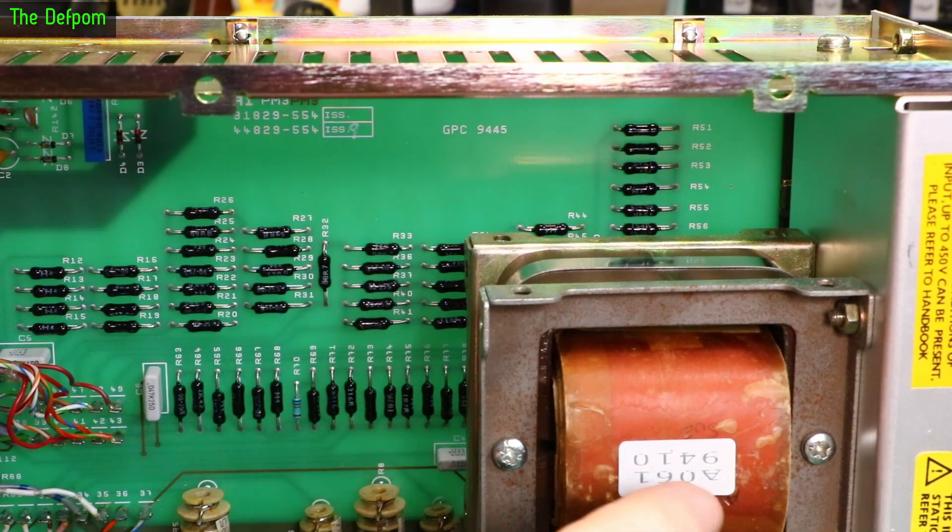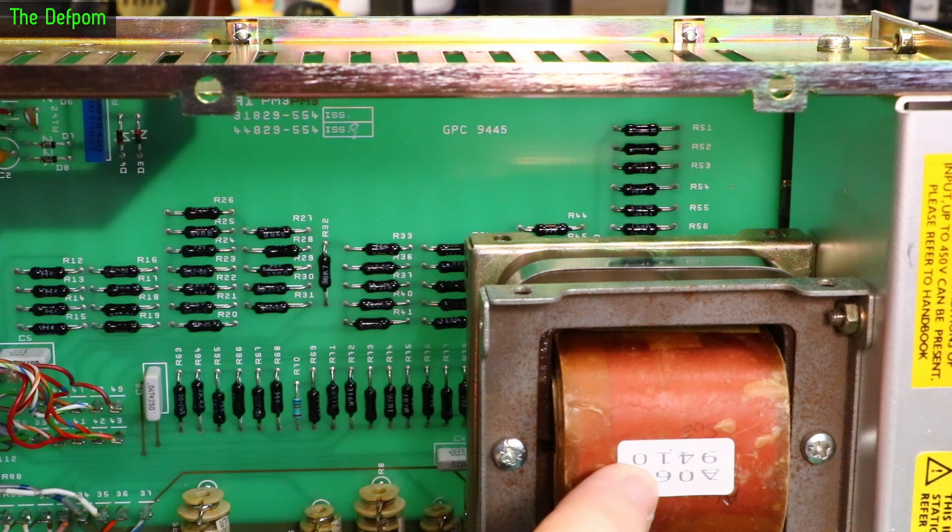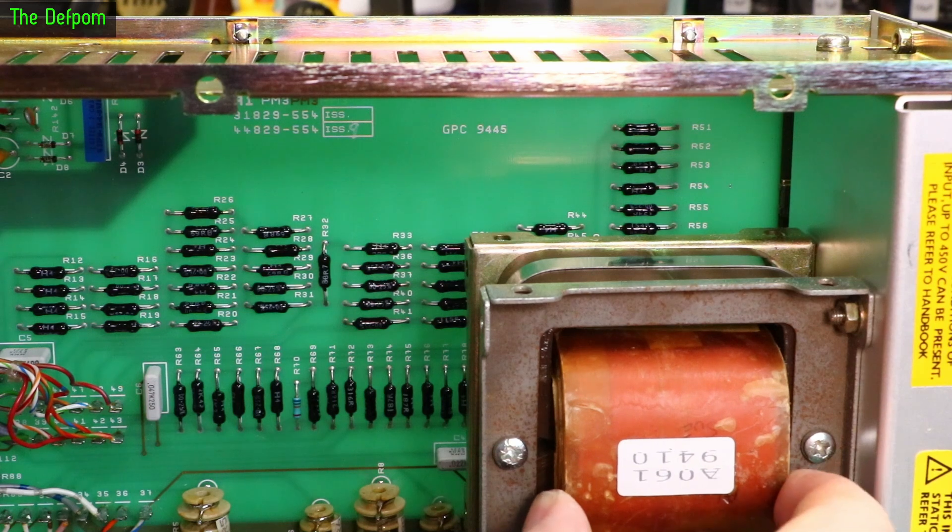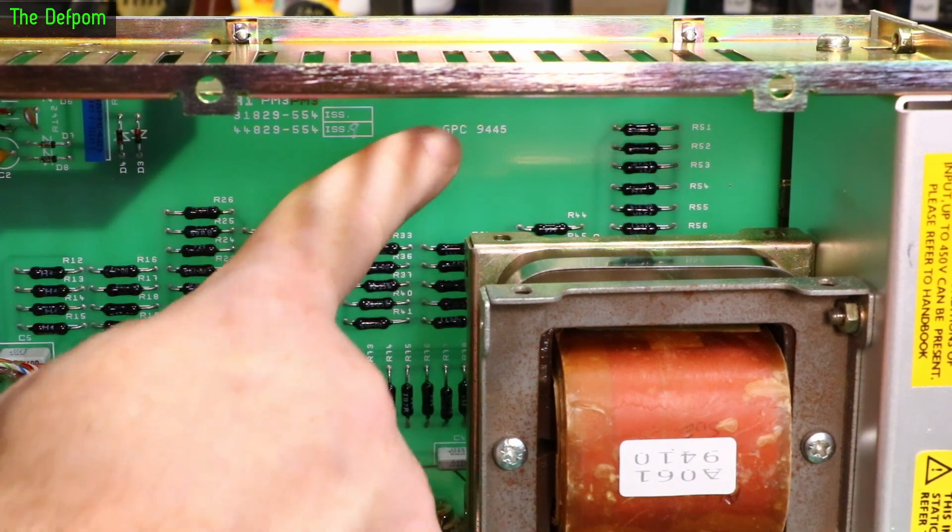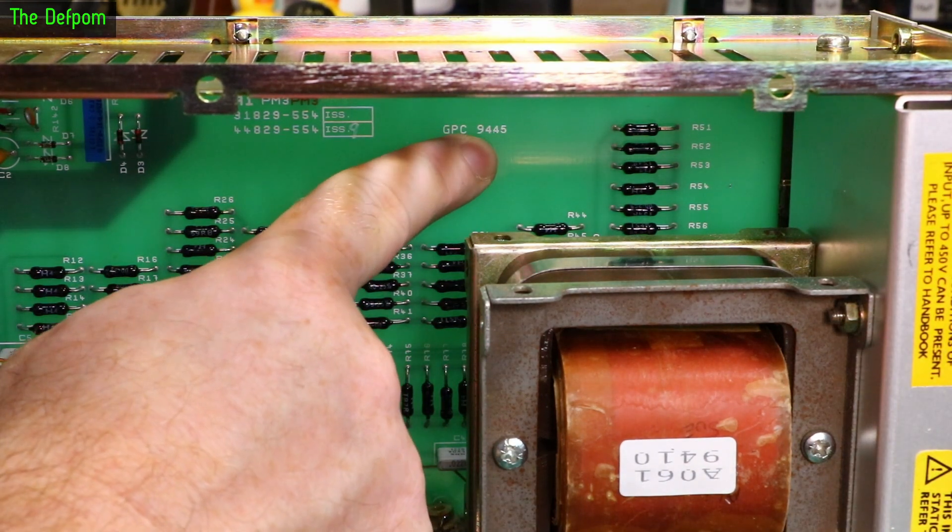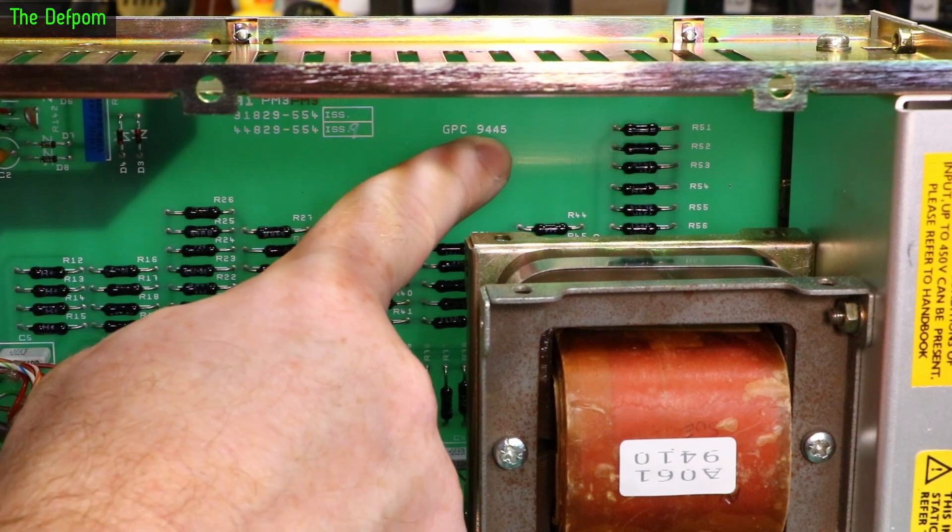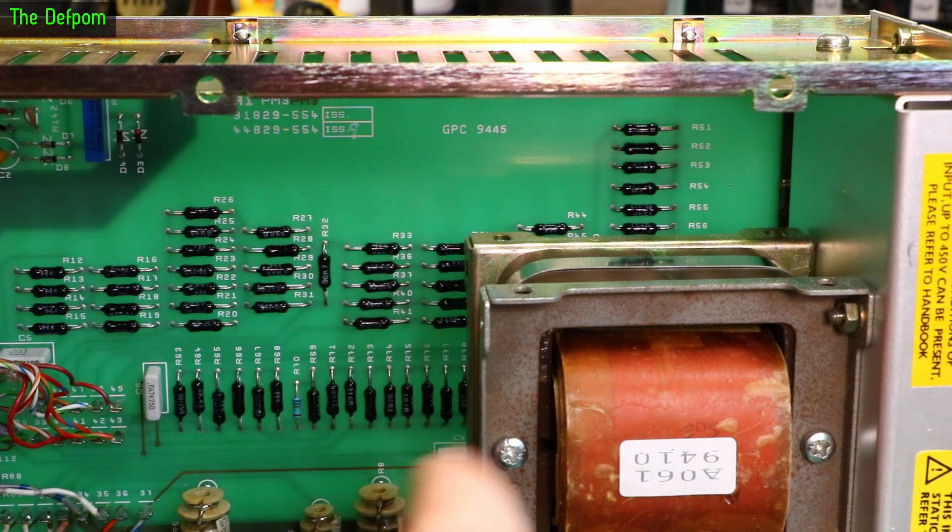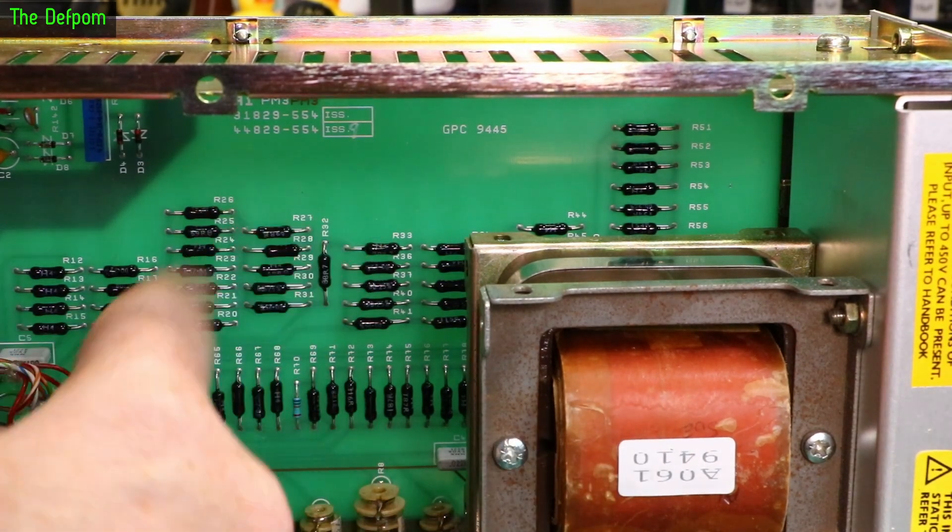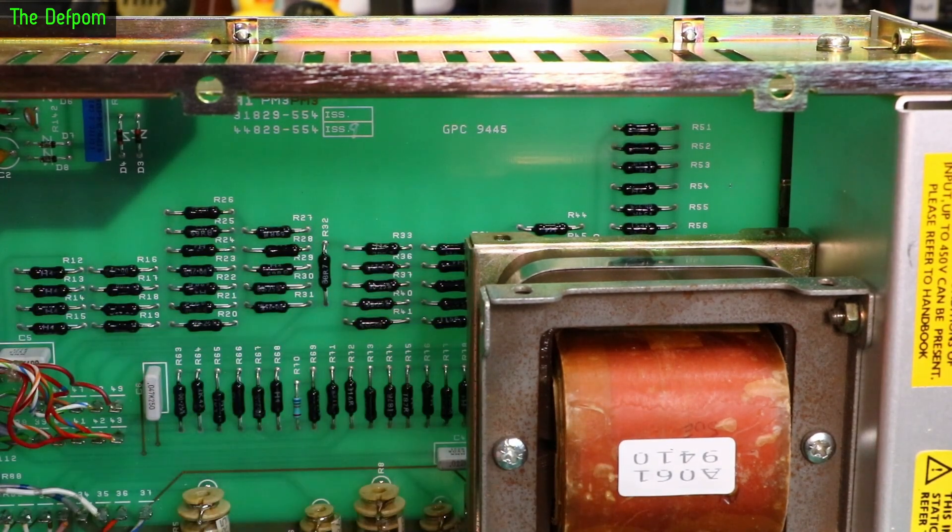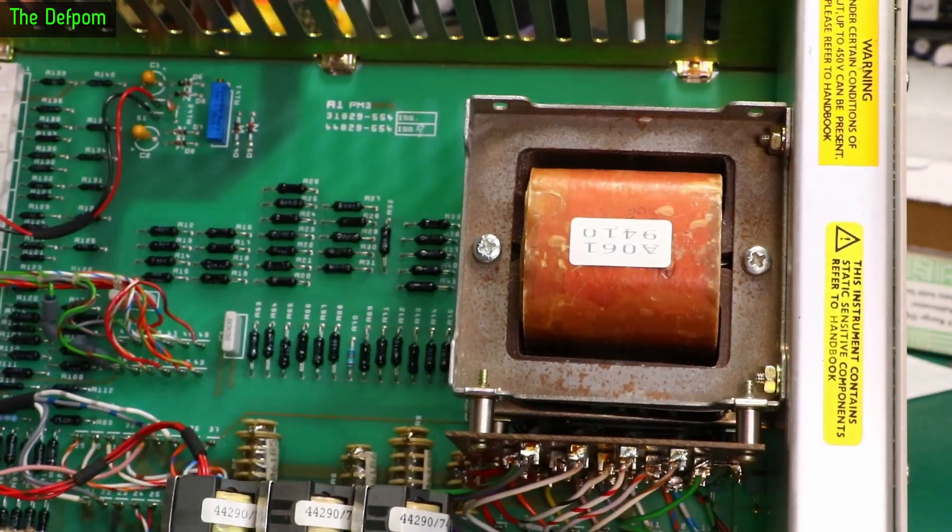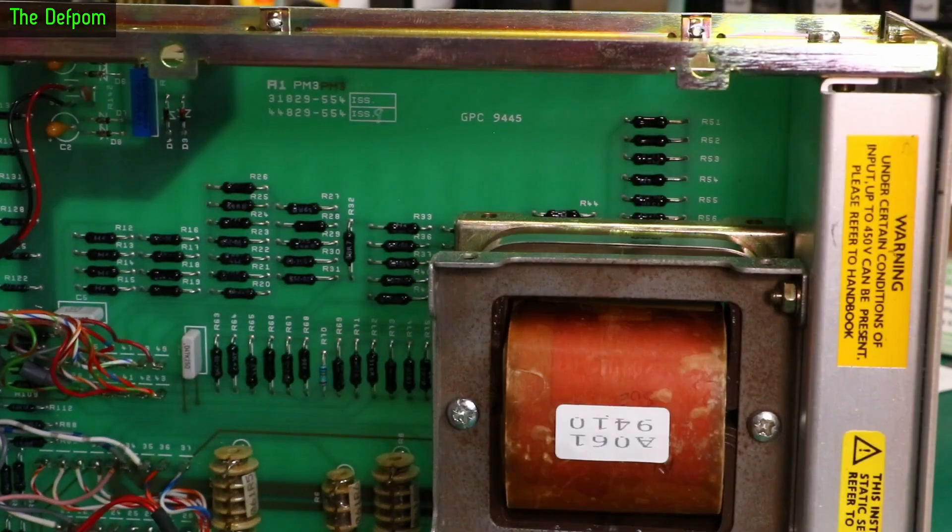So I'm trying to track down date codes. On a transformer here we've got 94.10 which could have been 1994. And over here we've got 94.45. So does that mean that's the 45th week of 94 when that board was done? It's certainly possible the transformer was made before the board was. So I reckon this is probably 1994 vintage.